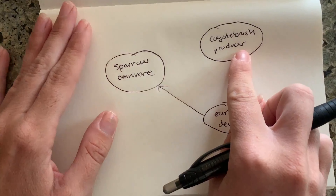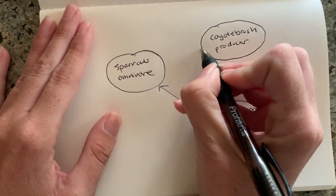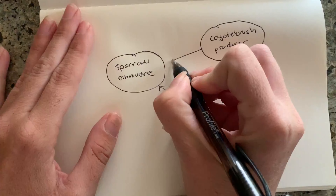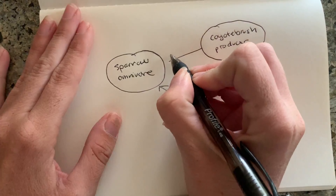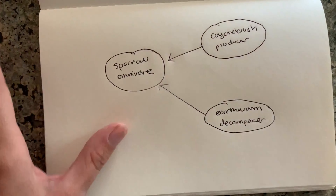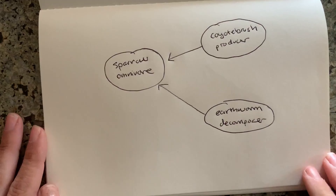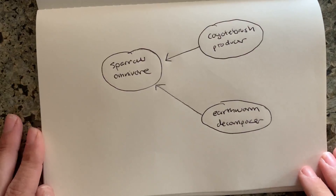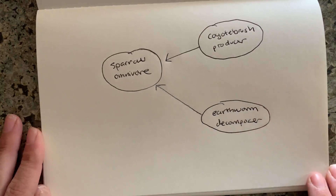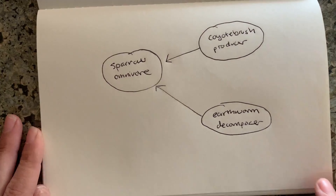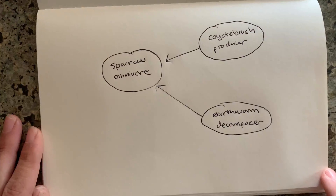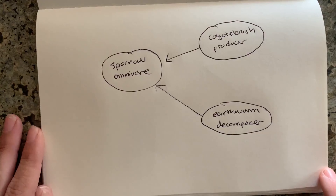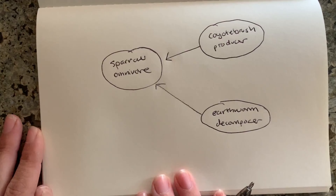Since the sparrow is an omnivore, it might also eat my producer, so I'll draw some energy from my producer going to my omnivore. That's just a couple of connections, but if you have all of the organisms that you found, you want to draw all the connections you can find between them for who eats who. Continue this process until you have a complete food web.